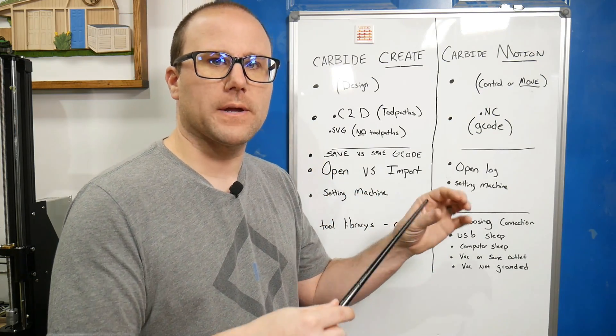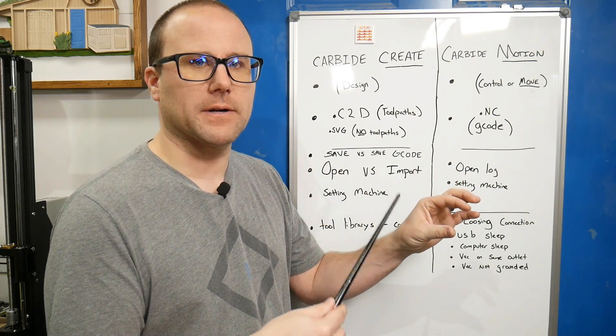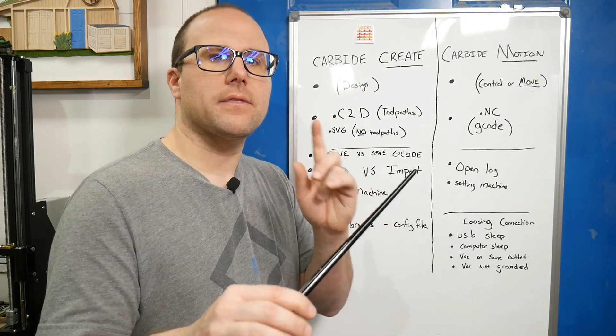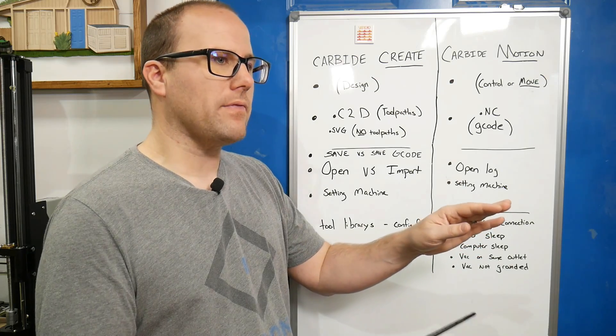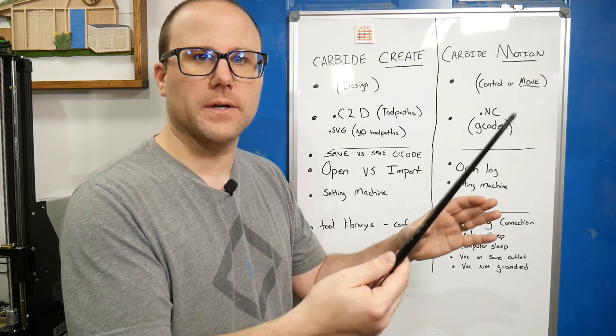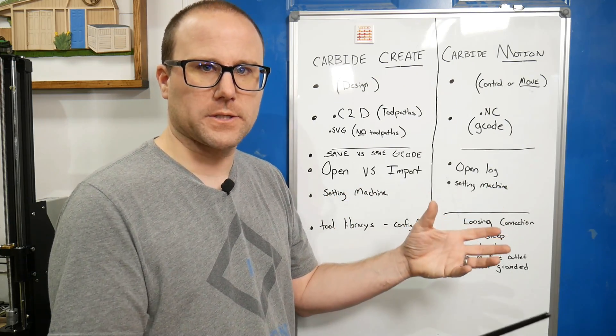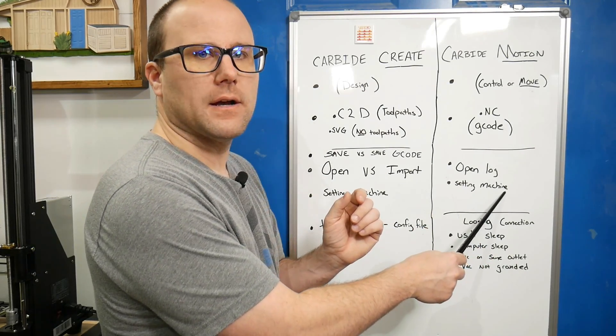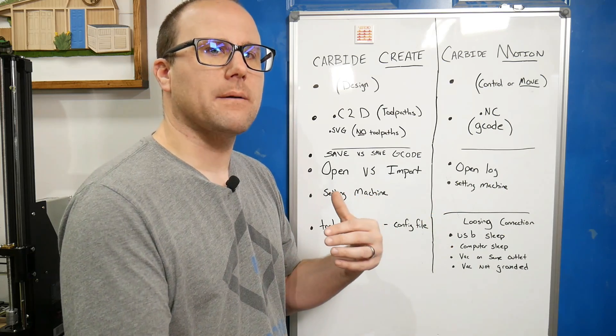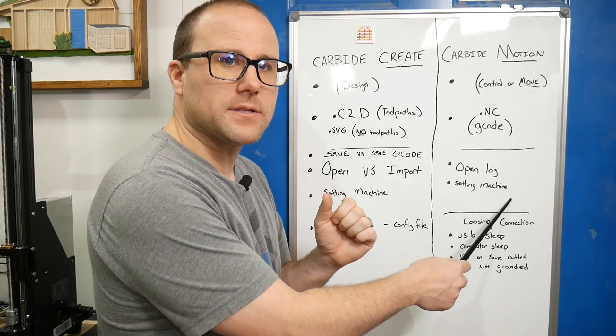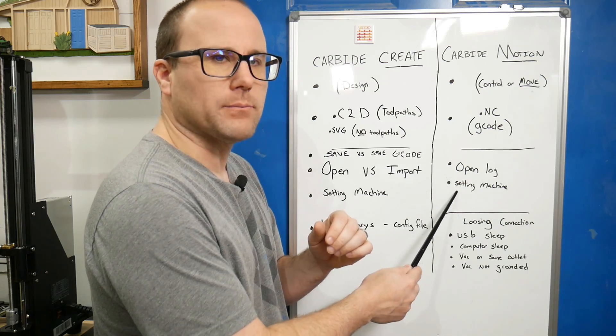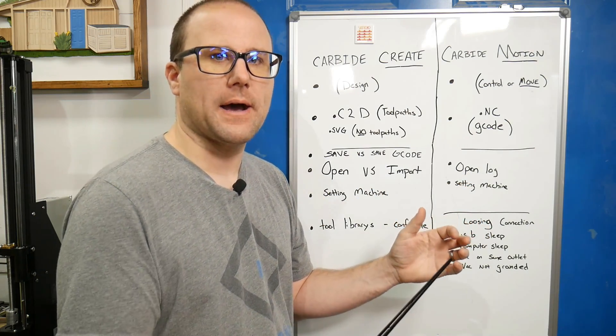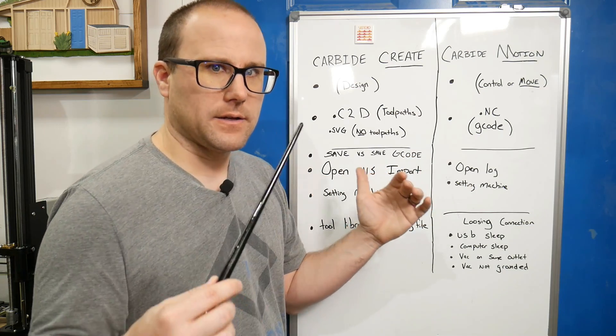It will always default every time you open to showing just Shapeoko. As long as you set it the first time, it will send that to the motherboard on the Shapeoko. It will stay that way, even if it says something different the second time you open it. So set it once and you never have to set it again. Even if it shows something else, click whatever machine you have, set it one time, and you are good.